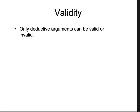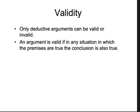What is validity? Validity is a property of deductive arguments. There's no sort of in-between — a deductive argument is either valid or invalid. An argument is valid if, in any situation in which the premises are true, the conclusion is also true. It's this relationship that if the premises are true, the conclusion must also be true.